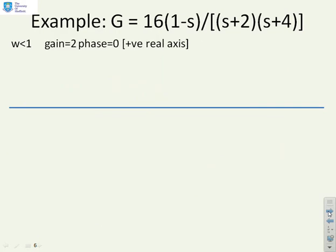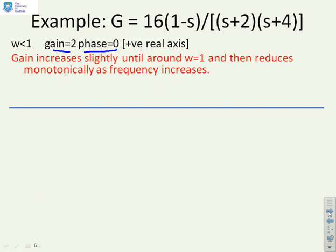Second example, G equals 16 times (1-s) over (s+2)(s+4). For small frequencies, you can see the gain is 2 and the phase is 0. We're going to start on the positive real axis. As we increase omega, this 1-s is probably going to dominate over the s+2 s+4 because the corner frequency of 1 comes before the 2 or the 4.